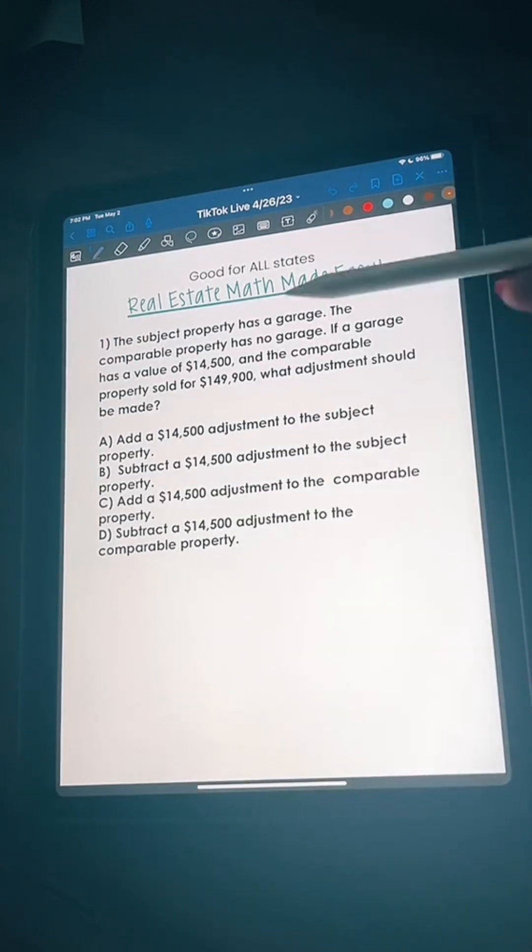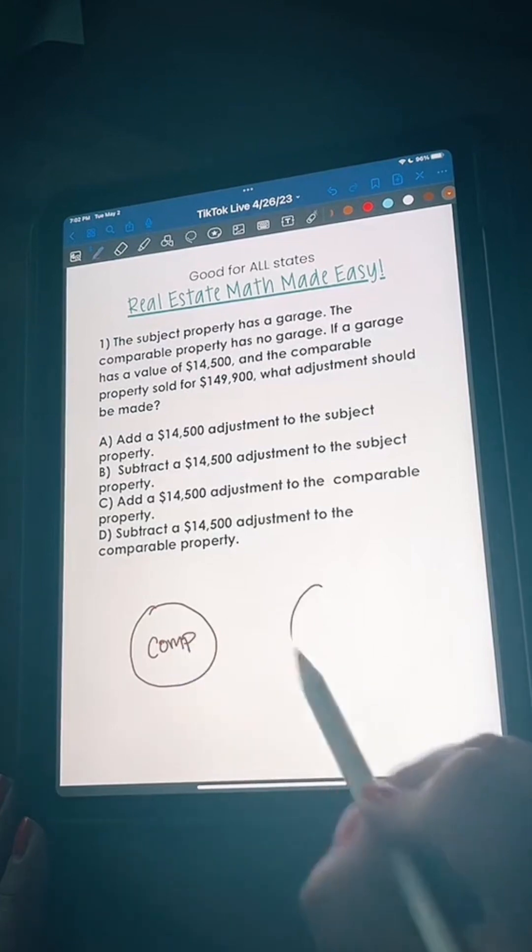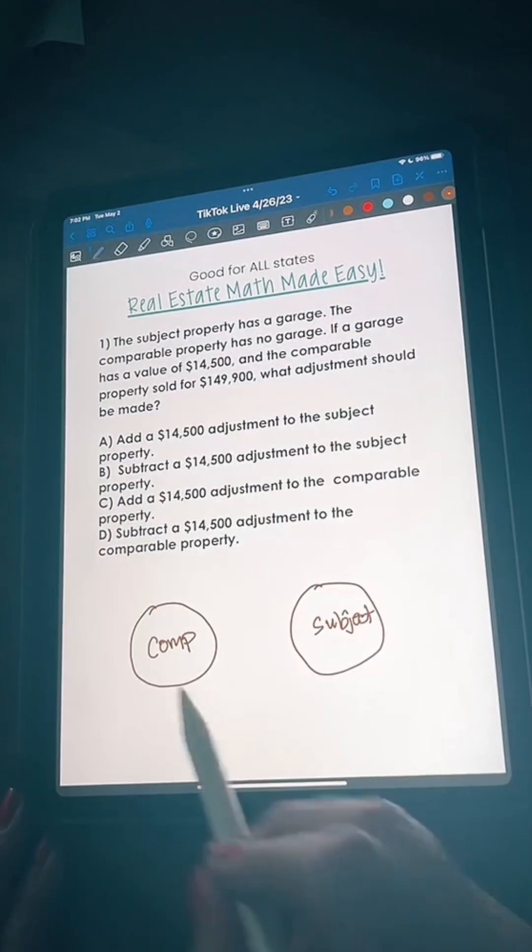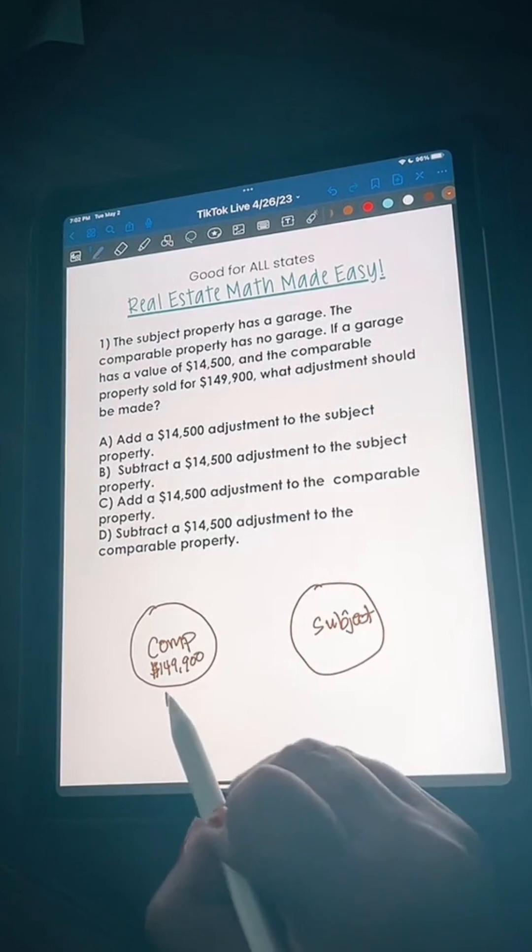We have a subject property and a comparable property, so remember we always manipulate the comparable property. That's the one that already has a price set that we know is definite. Let's just put it in illustration purposes. We have a comp here and we have the subject property which is the one that you're going to list. This comp sold for one hundred forty nine thousand nine hundred dollars. The comparable has no garage but this one does.